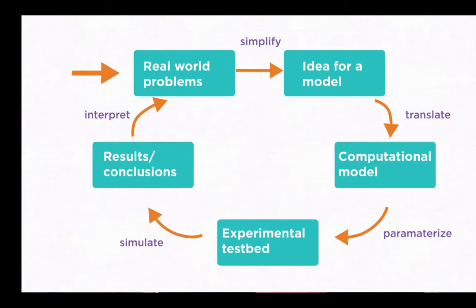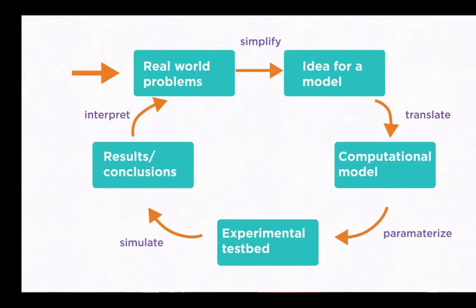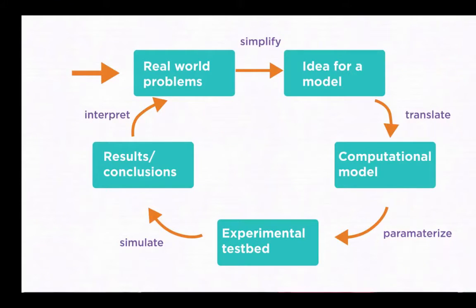Computational science opens up new opportunities for problem-solving and empowering students as scientists. We use the computational science cycle to describe the process used by computational scientists. We start by selecting a real-world problem or phenomenon we're interested in studying. Then we make a simplified version of the real world, producing an abstraction for a model. Next we go from the abstract idea to a computational model by representing the components and behaviors in terms of formal mathematics and algorithms. The next step is to translate the algorithms into computer code. These four steps are called computer modeling.